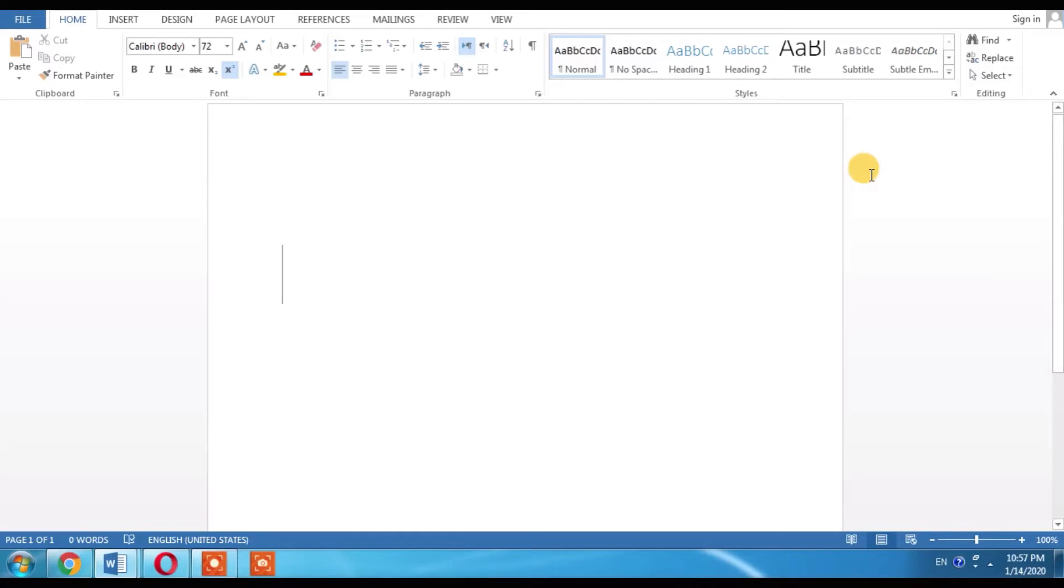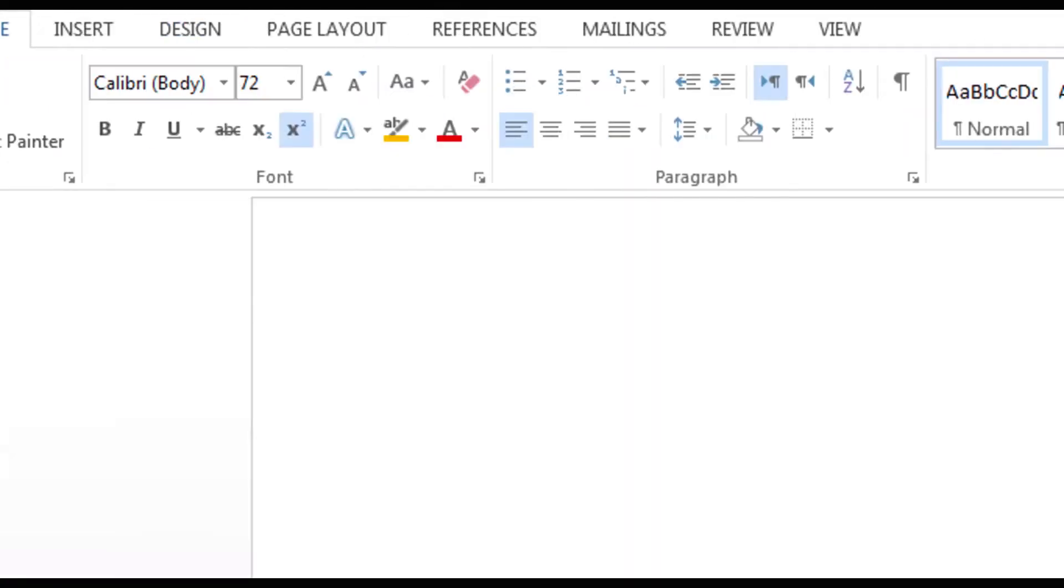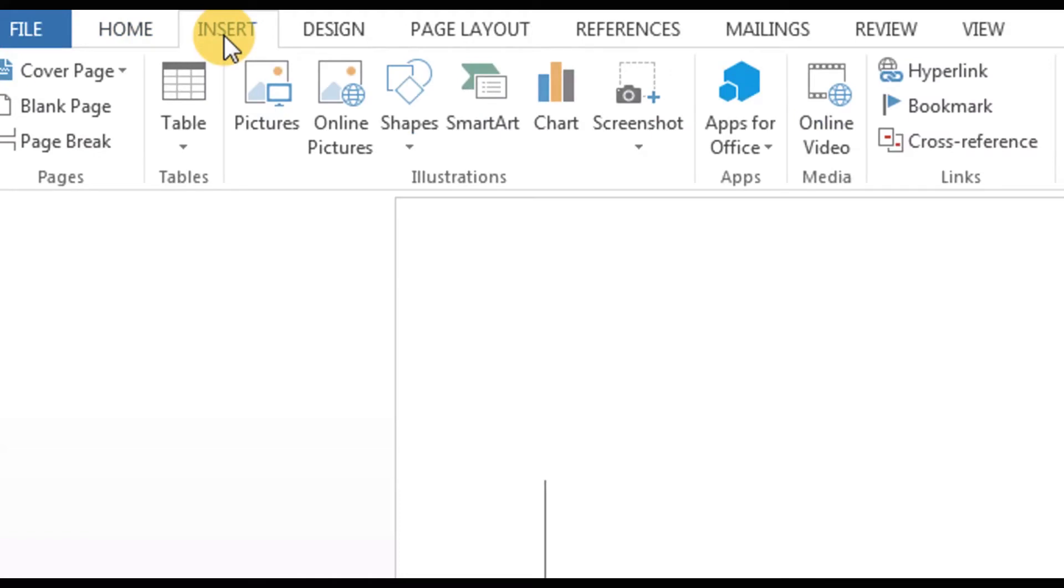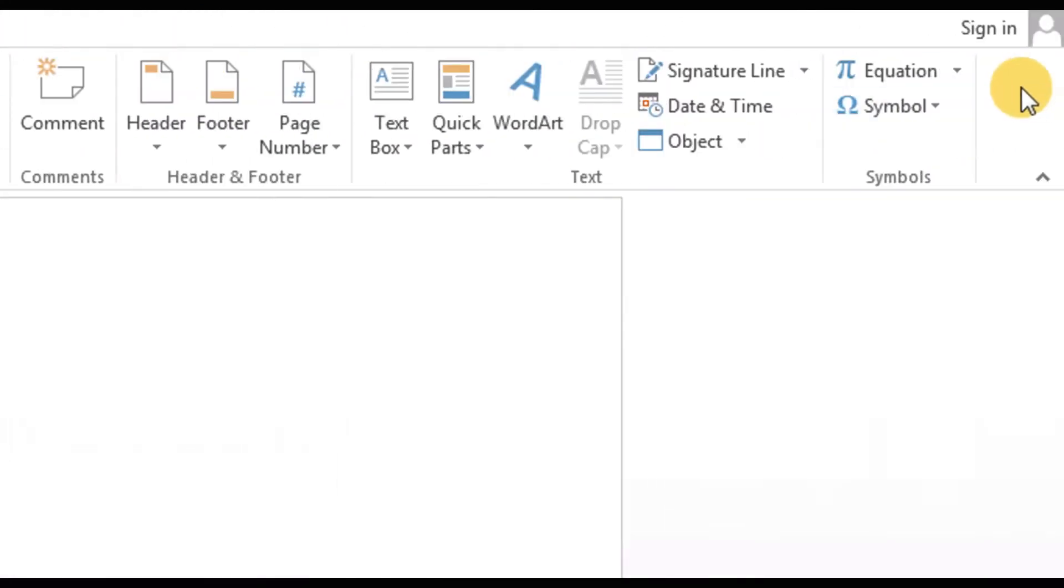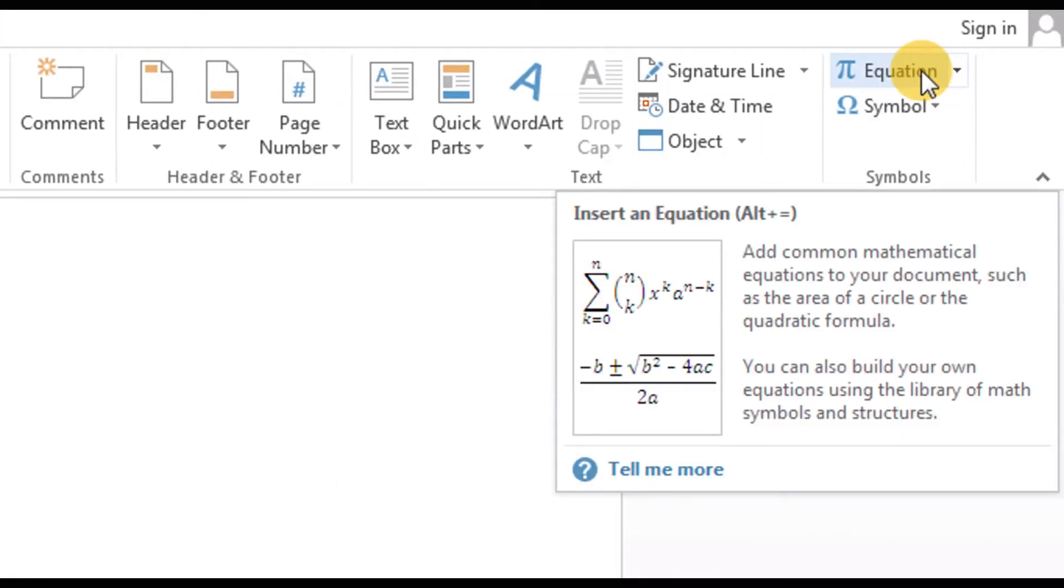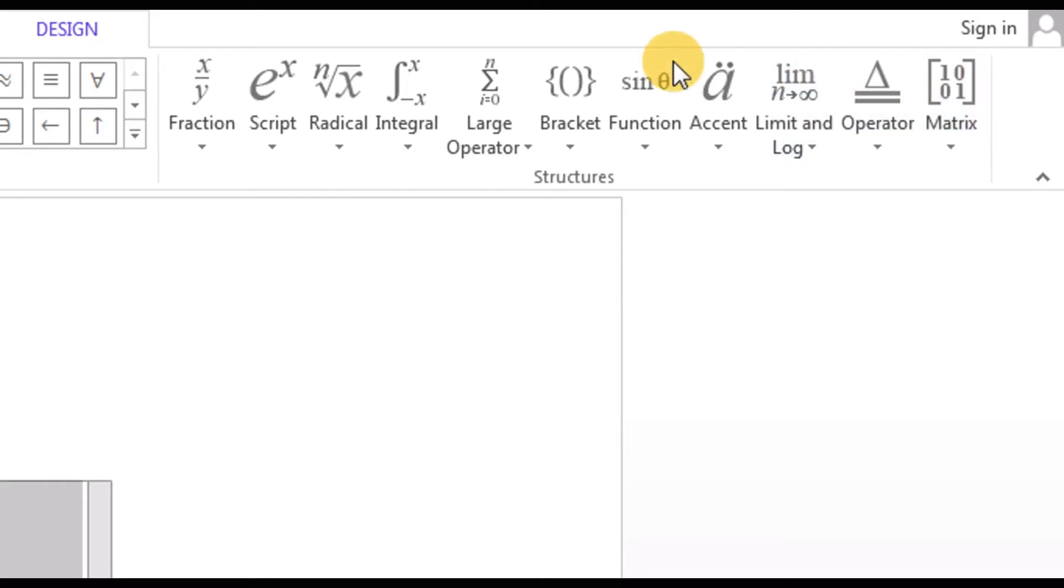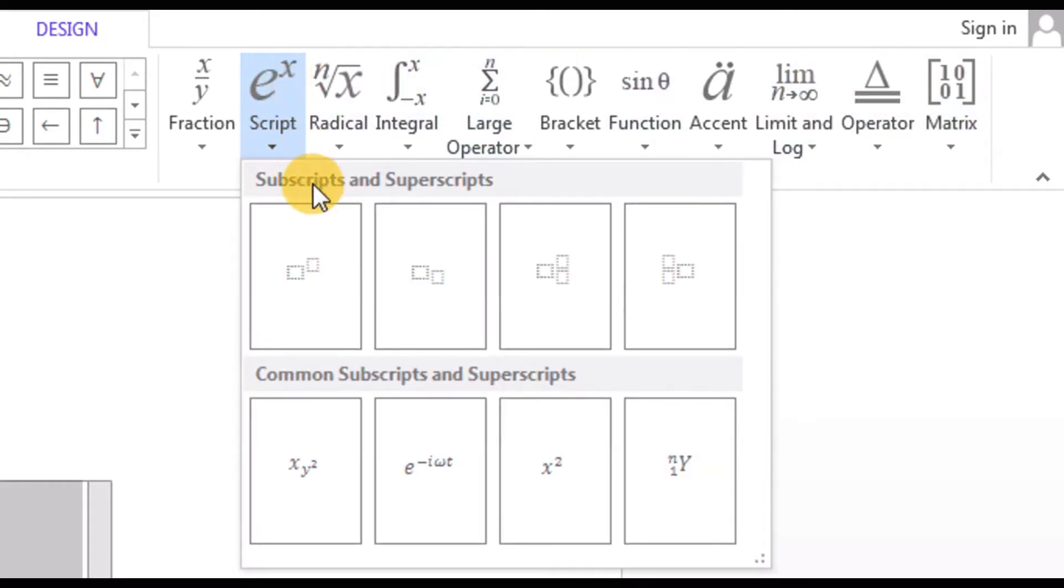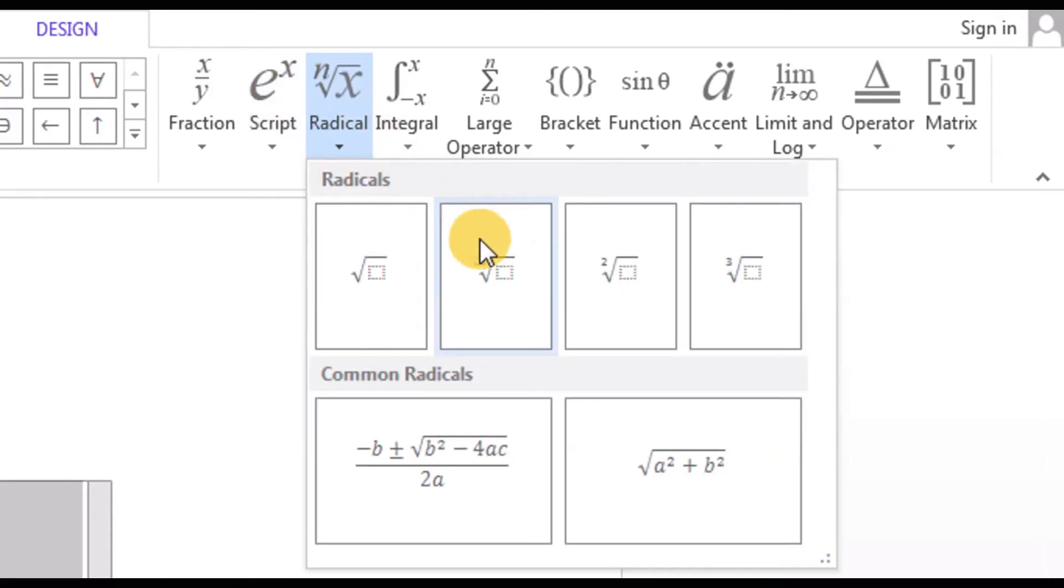For this you will have to first of all click insert, then click equations, script, sorry radical, and from radical you will have to click the fourth option which is cube root.